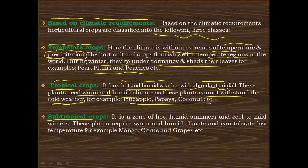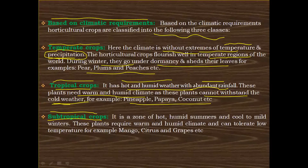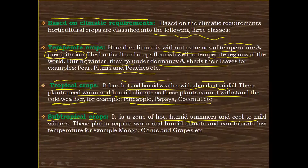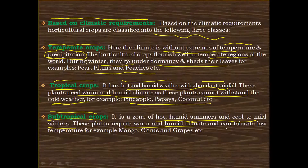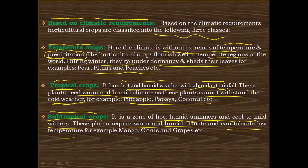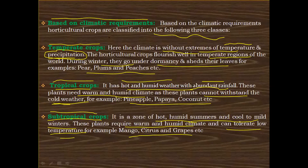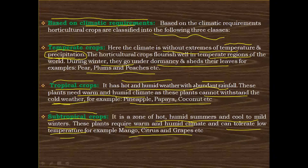The next one is subtropical crops. Subtropical crops are cultivated in the subtropical region, which has very hot, humid summers and cool to mild winters. These plants require a warm and humid climate but can also tolerate low temperatures. They love warm and humid conditions while also tolerating cold to some extent. For example, mango, citrus, and grapes.